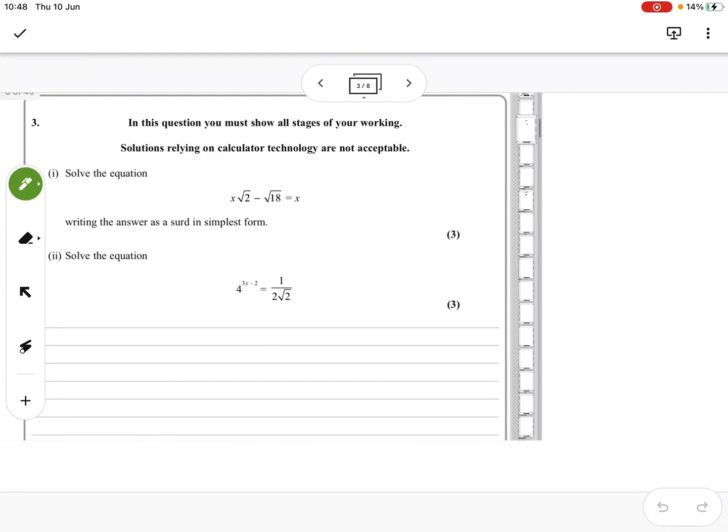Right, this is still October 2020, question 3, the AS paper. So we're on question 3, which is all about surds. There are a couple of ways of doing the second part, but the first part should be reasonably straightforward.